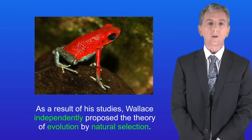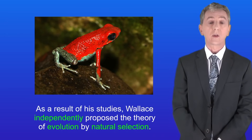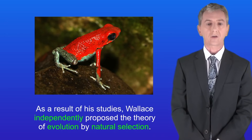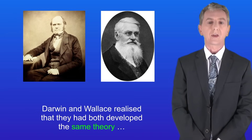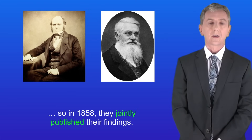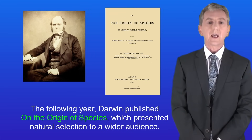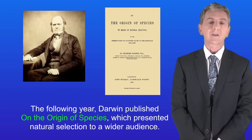As a result of his studies, Wallace independently proposed the theory of evolution by natural selection. Darwin and Wallace realised that they'd both developed the same theory, so in 1858 they jointly published their findings, and the following year Darwin published On the Origin of Species, which presented natural selection to a wider audience.